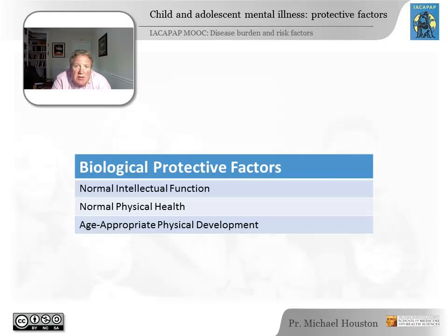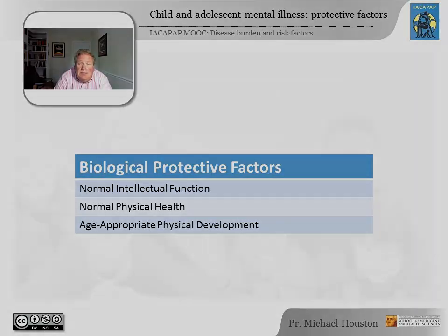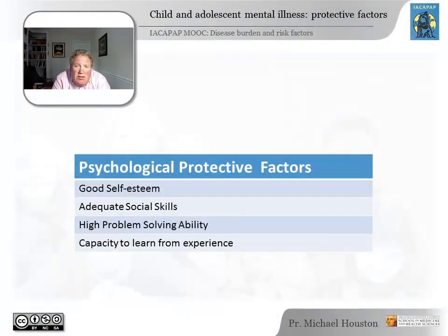In the next few slides we'll look at protective factors that might mitigate or reduce the risk of psychiatric illness in children. These carry great importance as they often help point the way toward helping an otherwise vulnerable child. In the biological sphere, normal development, normal intellect, and good physical health can protect a child from detrimental factors. We can also use some of these factors to promote mental health — psychologically, focusing on developing a child's self-esteem or promoting better social skills will help protect them from the effects of an otherwise negative environment.